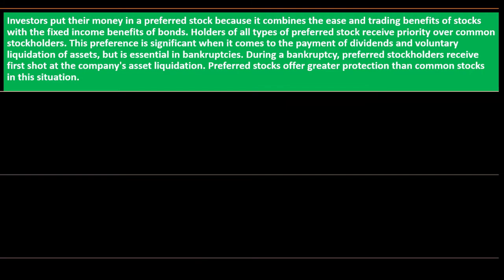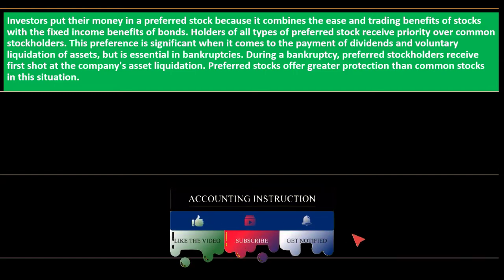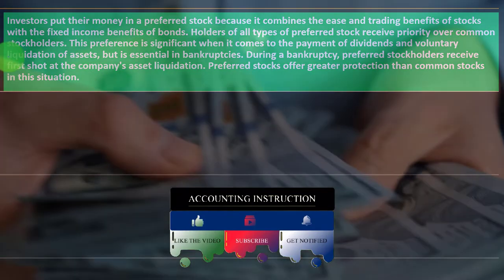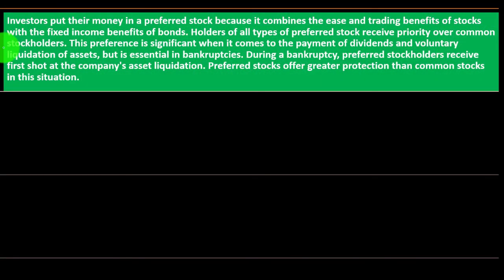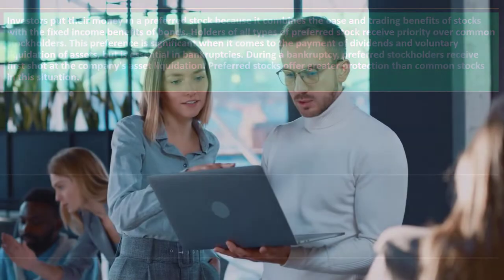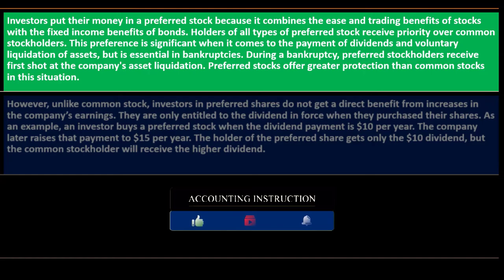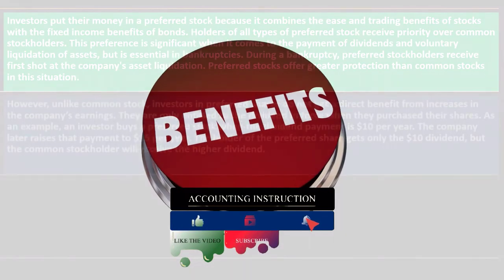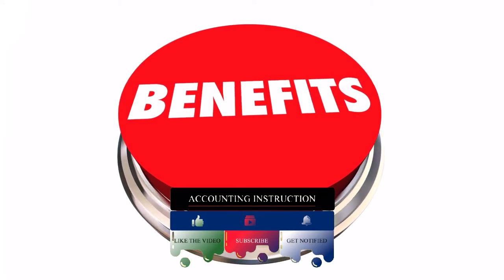Preferred stock versus bonds: investors put their money in preferred stock because it combines the ease and trading benefits of stocks with the fixed income benefits of bonds. Holders of all types of preferred stock receive priority over common stock shareholders — they get paid first with regard to dividends and in the event of liquidation. This preference is significant when it comes to payment of dividends and voluntary liquidation of assets, and is essential in bankruptcy, where preferred stockholders get first shot at the company's asset liquidation.